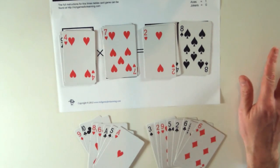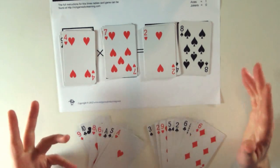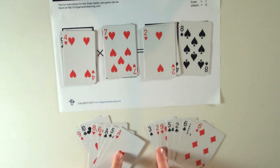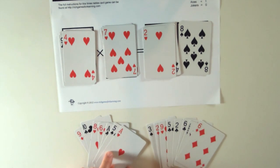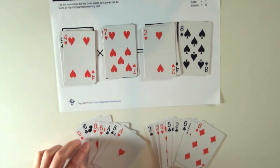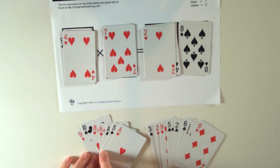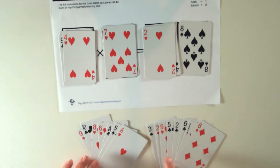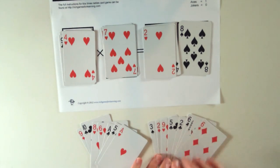Once there's no more cards left and none of the players can do anything else, whoever has the least amount of cards would be the winner. So in this case, if none of these players could do anything, this player would be the winner because they've got seven cards and this player still has eight cards left.